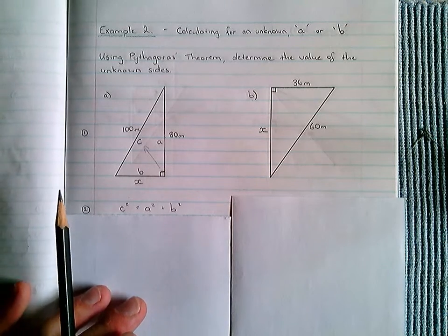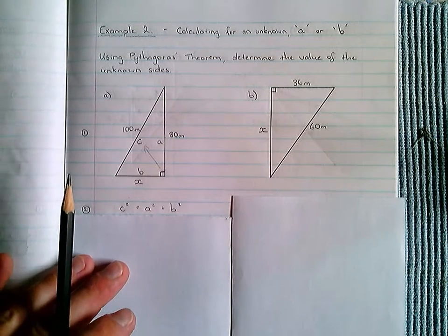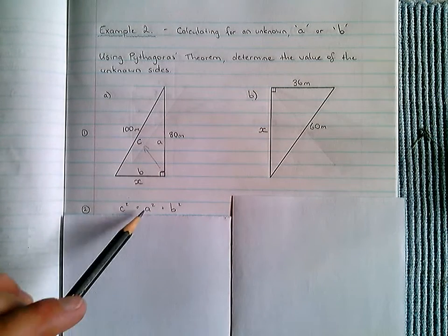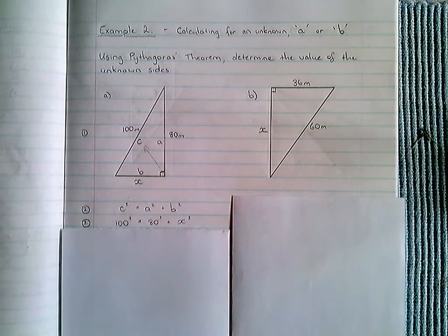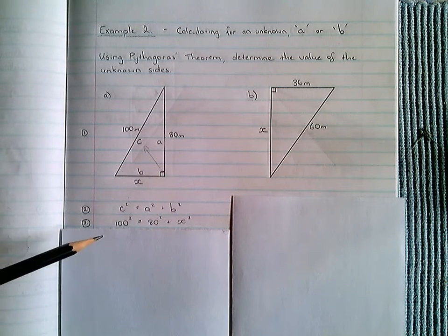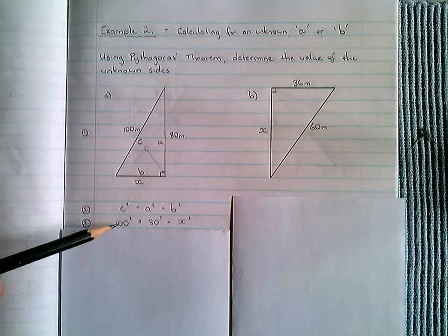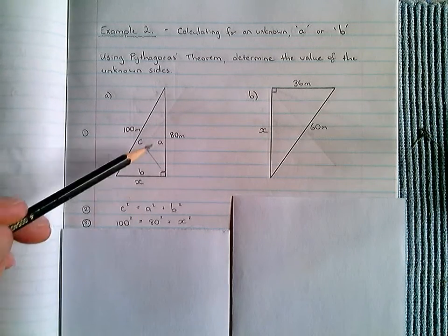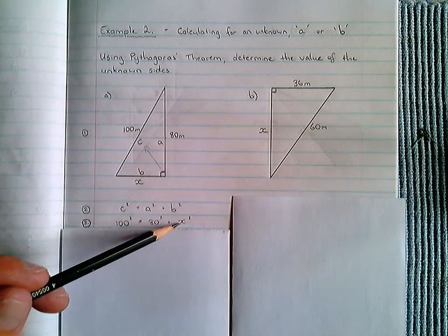Step 2, we then define Pythagoras' theorem, C squared equals A squared plus B squared. And step 3, we substitute these values into the formula. What we have for C is the hypotenuse side 100, A is 80, and B is our unknown X.